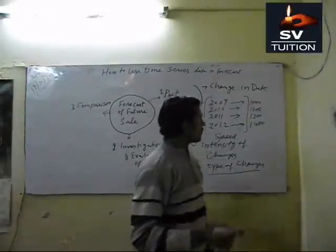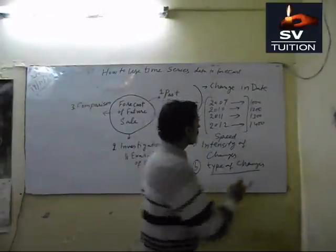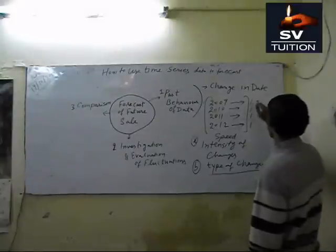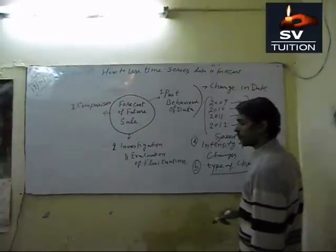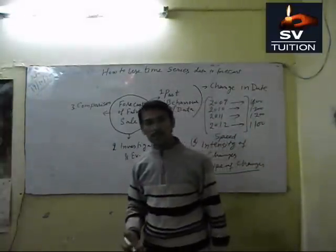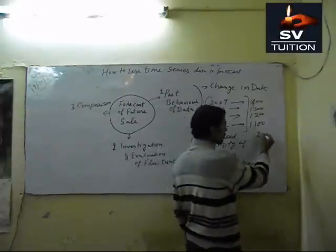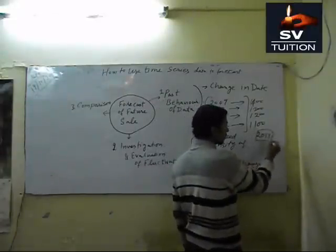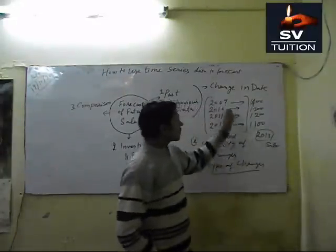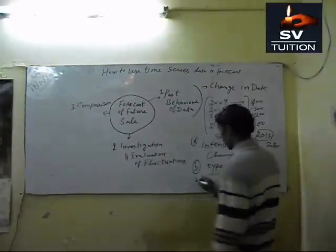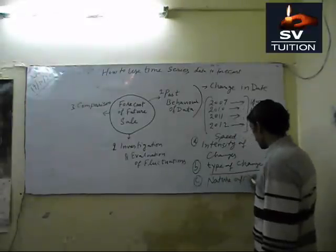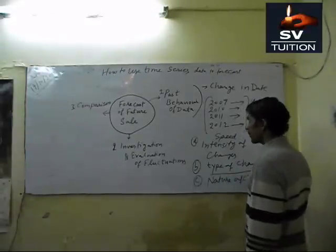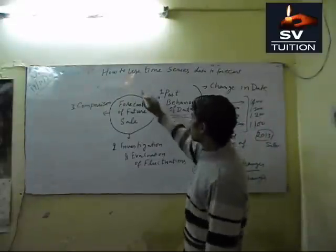Trend means the data goes from 1100, 1200, 1300, to 1400 — so we can estimate the 2013 sales on this basis. We also check the nature of changes. Time series data is helpful to check the past behavior.